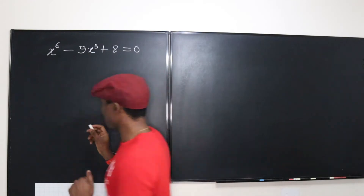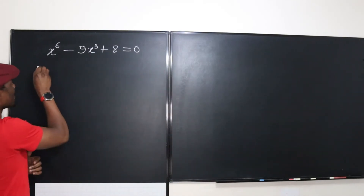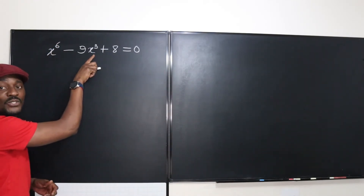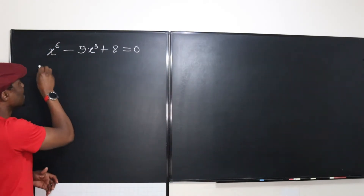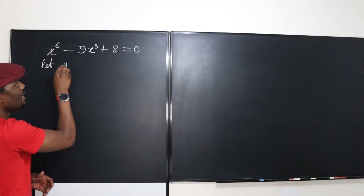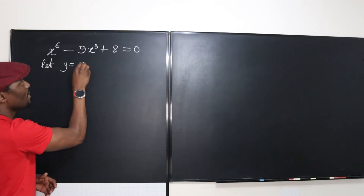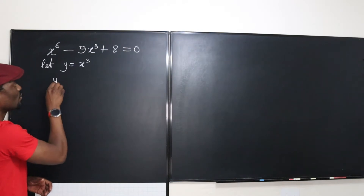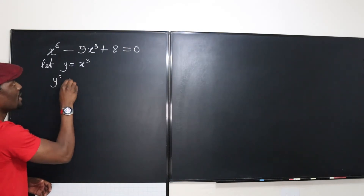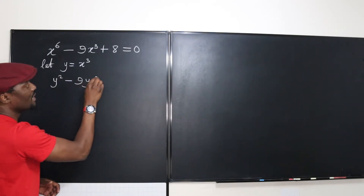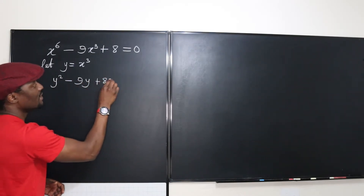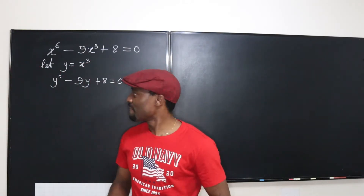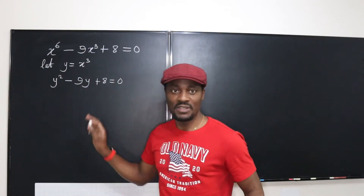Because x to the sixth is the square of x to the third, I can say: let y be equal to x to the third. So I can rewrite this equation as y squared minus 9y plus 8 equals zero. And with that, you can factor this.